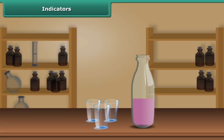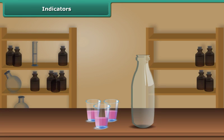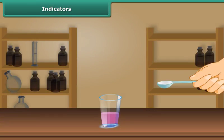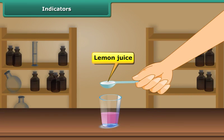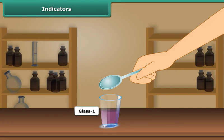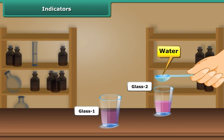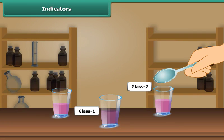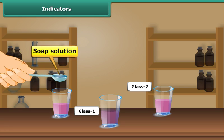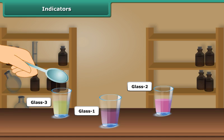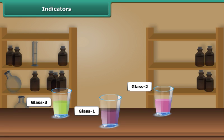Take a small amount of this indicator in three small glasses. Pour lemon juice in the first glass, water in the second glass, and soap solution in the third glass.